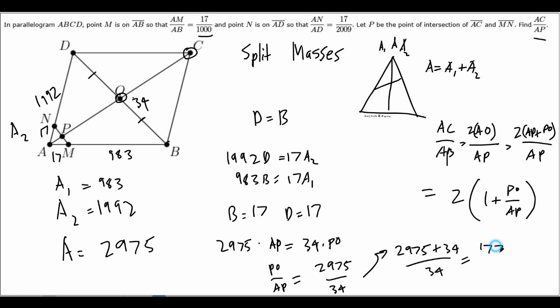So if you calculate the mass, you have AC over AP—you have to multiply this by two—equals 177. So the answer to this AIME problem is 177. Thanks for watching, that's how you do split masses, and I'll see you next week.